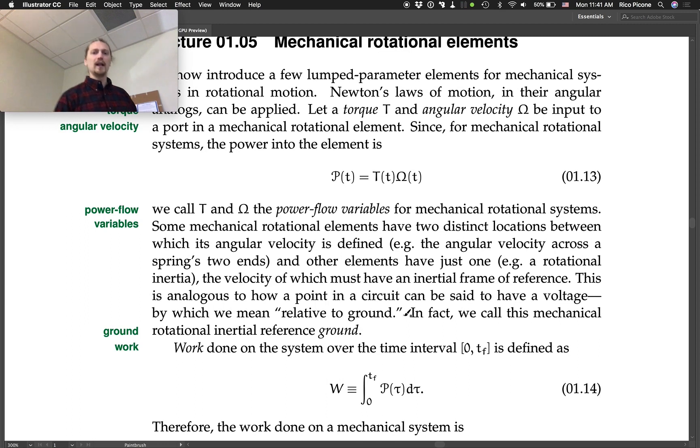Mechanical rotational elements have two distinct locations between which its angular velocity is defined. For example, the angular velocity across two ends of the spring. And other elements have just one. For example, a rotational inertia, the velocity of which has an inertial reference frame, which is zero angular velocity or constant angular velocity.